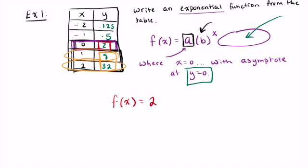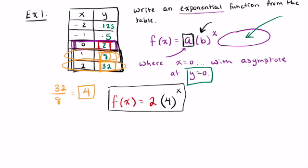Now, all I have to do is take my second y value and divide it by the first y value. 32 divided by 8 gives me 4. So I wind up with 2 times 4 to the x. And that is my exponential function from a table.